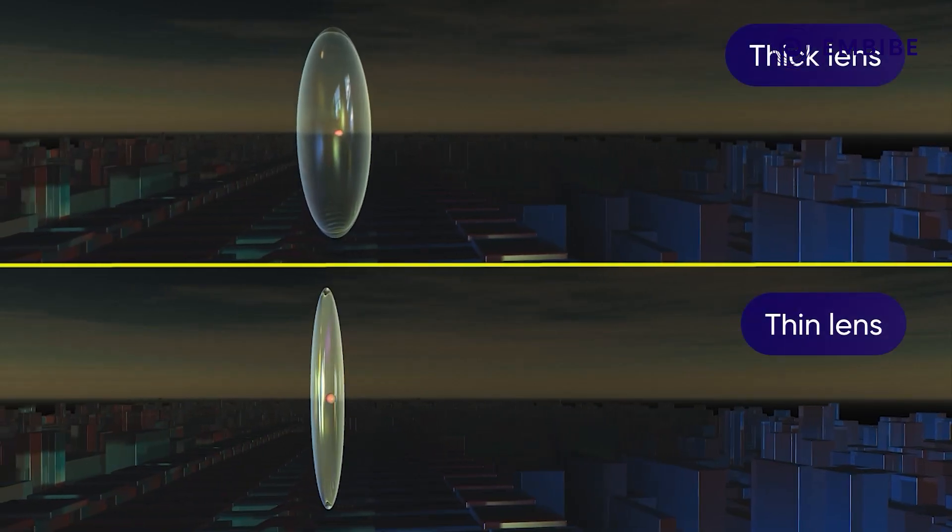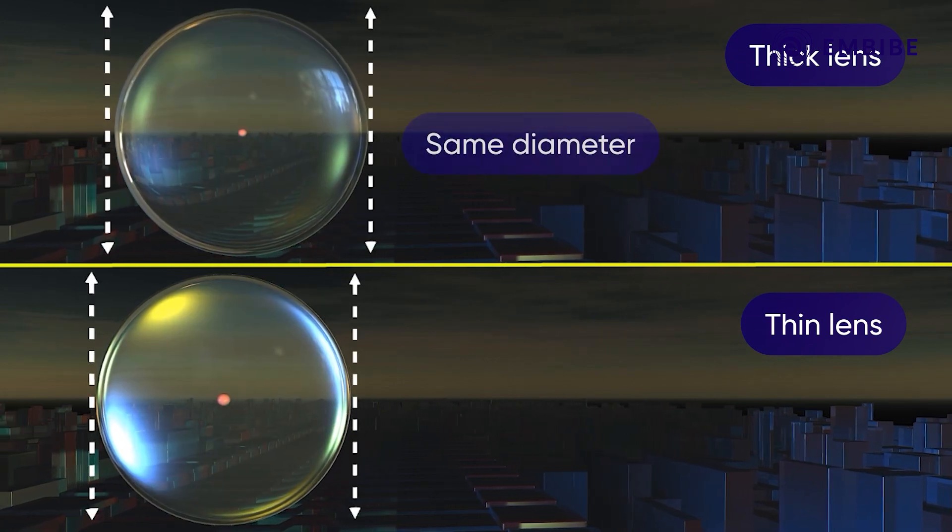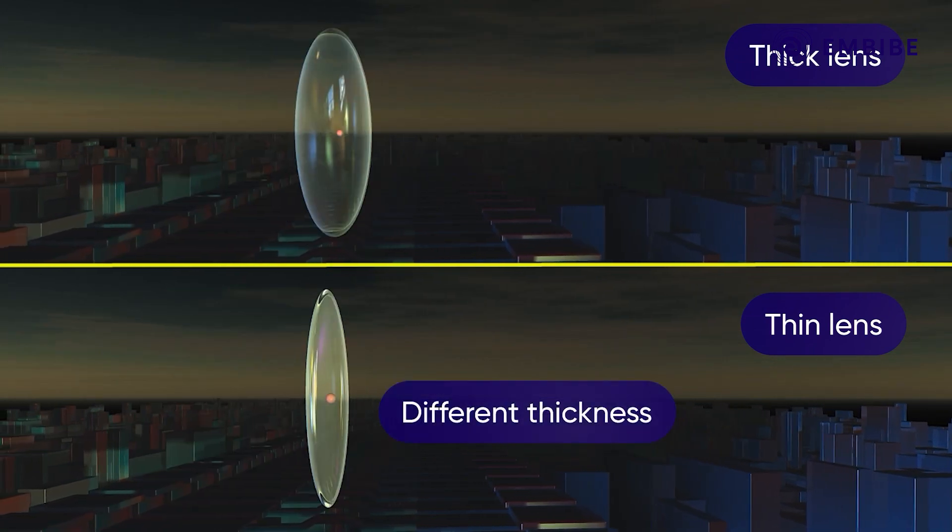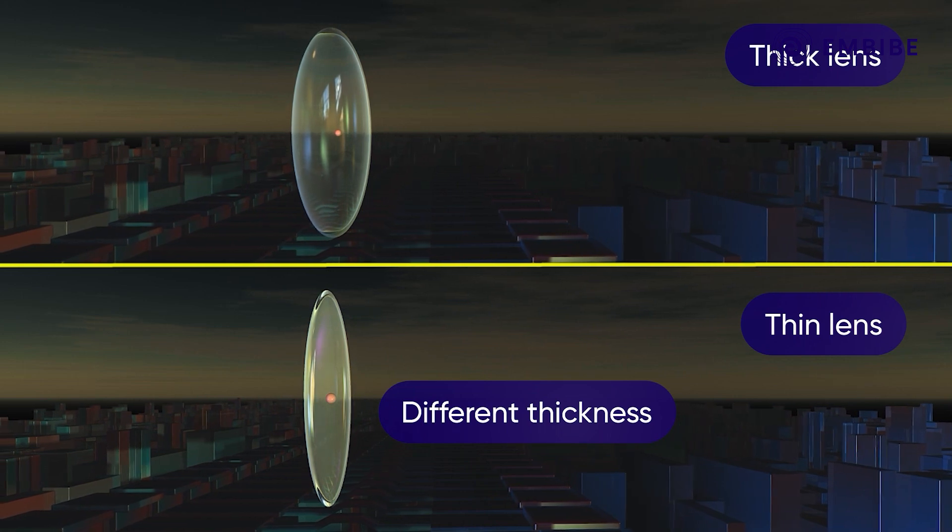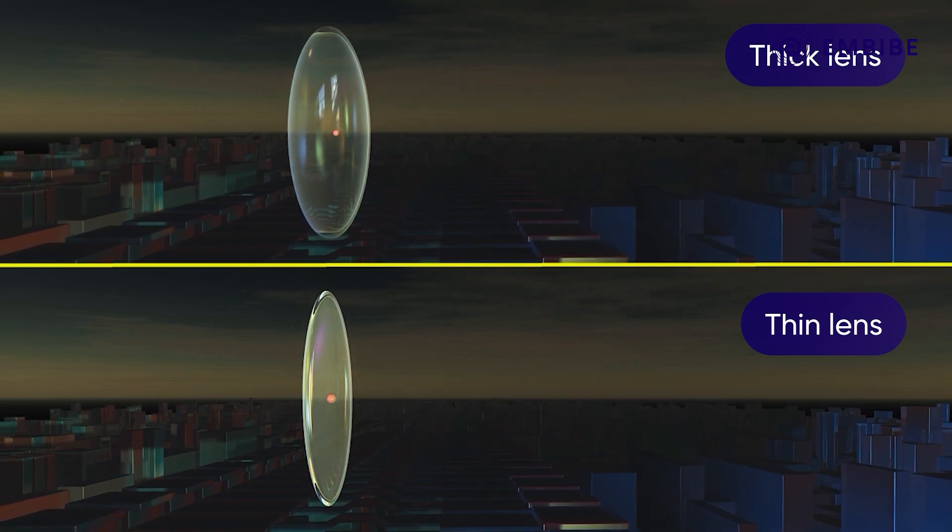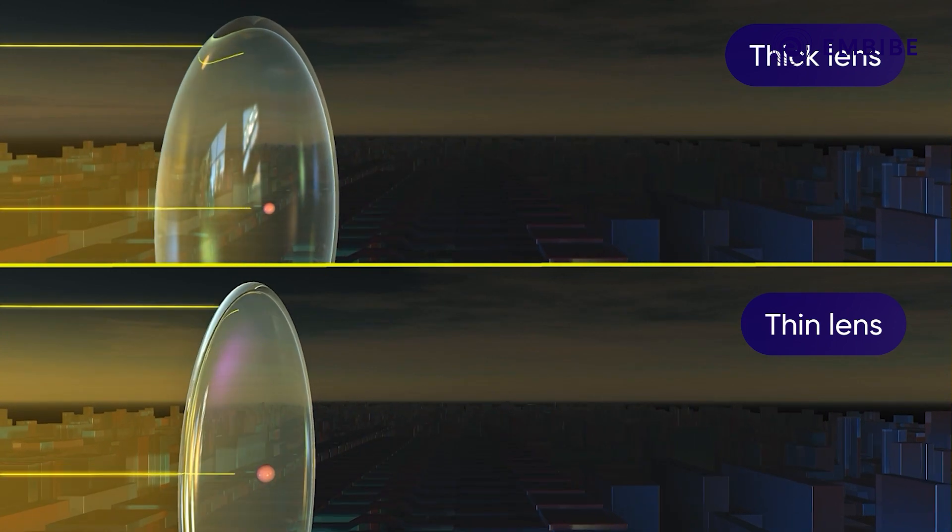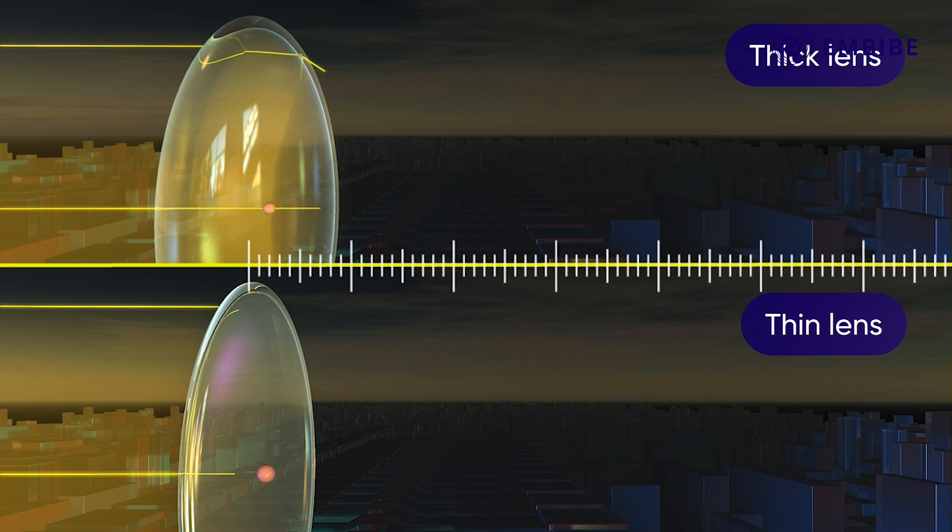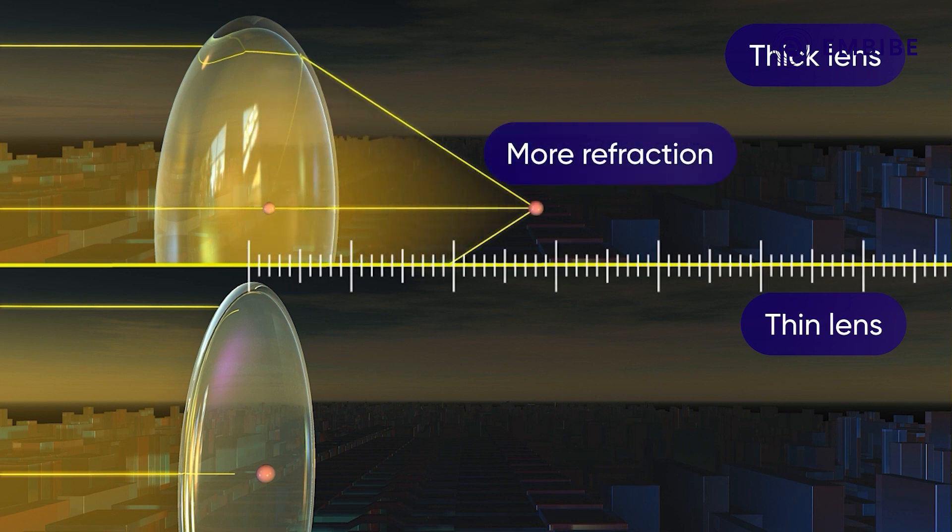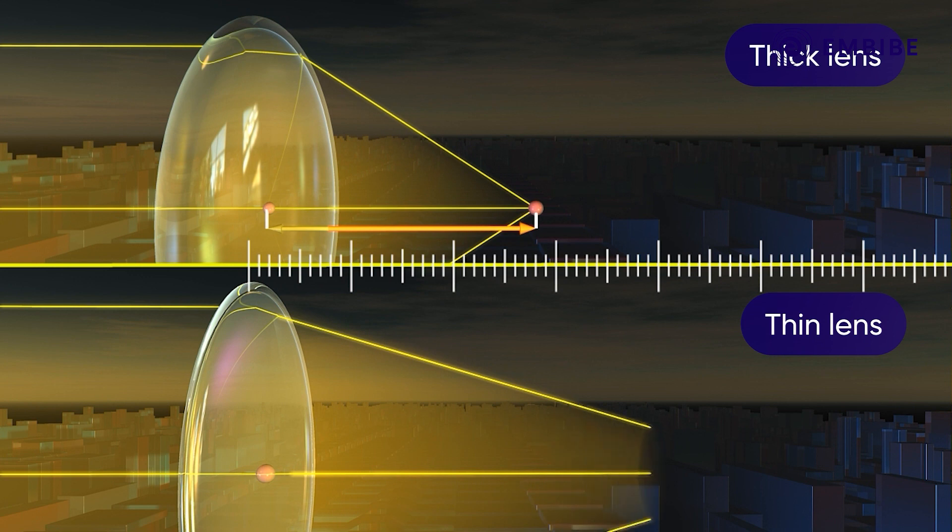Take two lenses of the same diameter but of different thickness and hence curvature. When the parallel light rays are incident on them, you can observe that the light rays passing through the thick lens undergo more refraction and get converged at a shorter distance as compared to the thin lens,